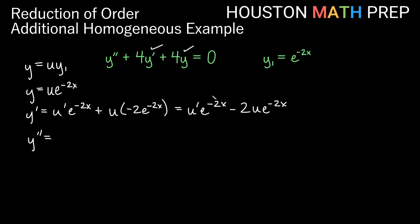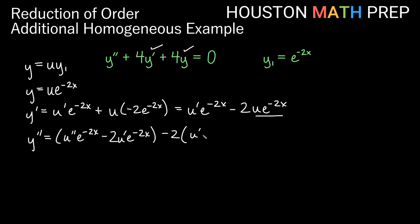Now let's go ahead and do our y double prime by taking the derivative of this first derivative. Each of these is going to be a product rule. The derivative of the first term gives u double prime e to the negative 2x minus 2u prime e to the negative 2x. For the second term, we bring out the negative 2, giving u prime e to the negative 2x and negative 2u e to the negative 2x. Simplifying, we get u double prime e to the negative 2x, and here we have minus 2u prime minus another 2u prime exponential, so that's minus 4u prime e to the negative 2x.